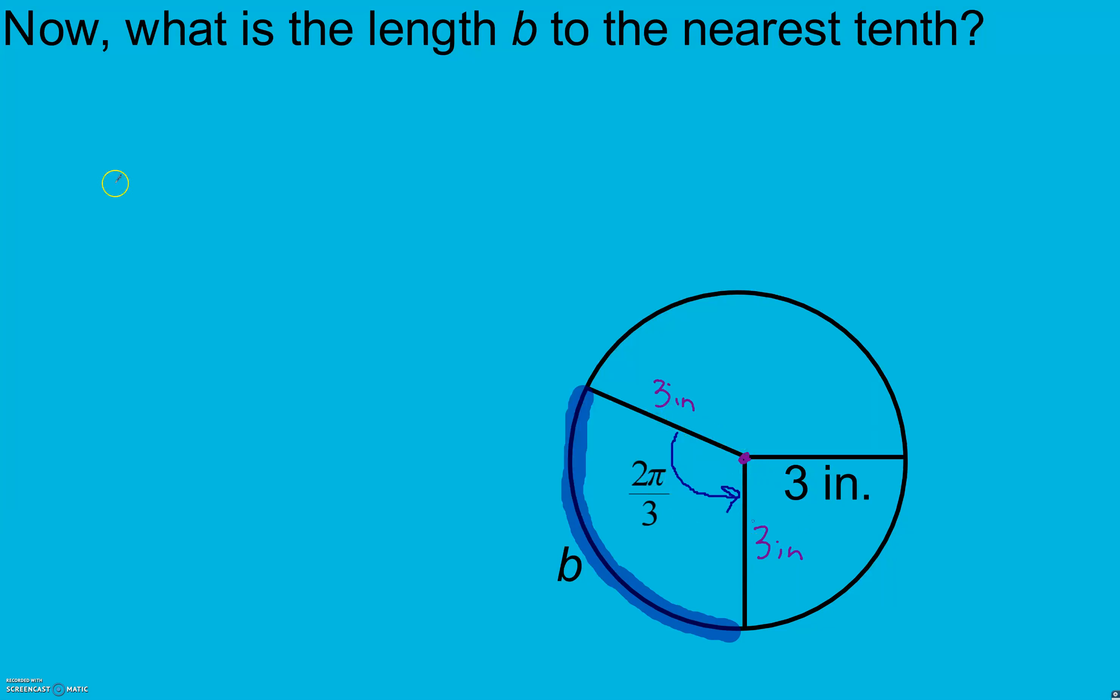So we take our radius times our theta measure. Our radius is 3 times 2π over 3. And our arc length is 2π, which is approximately 6.28 inches here.